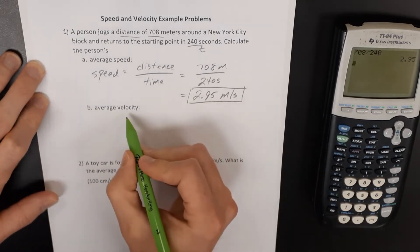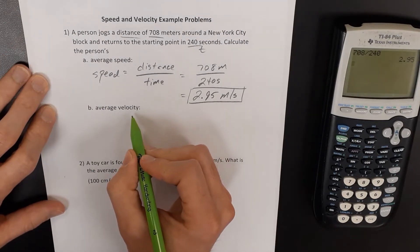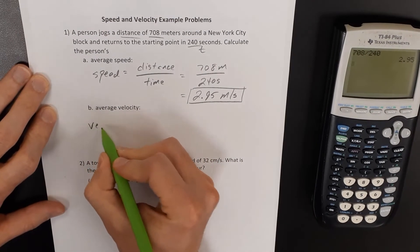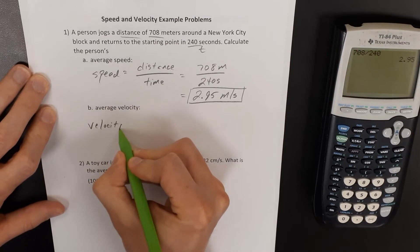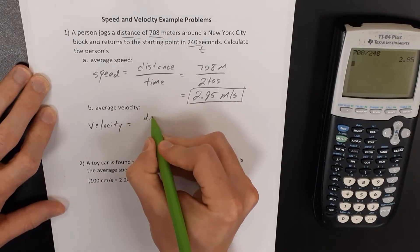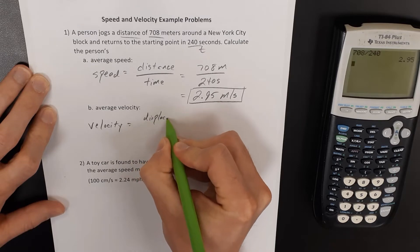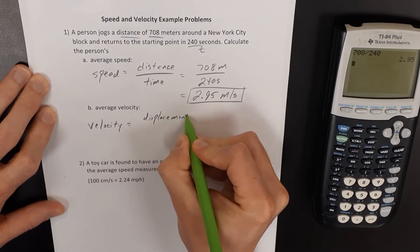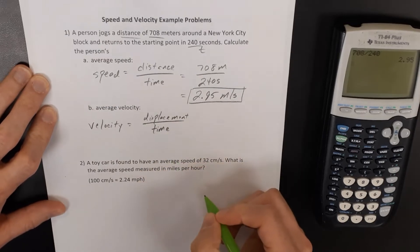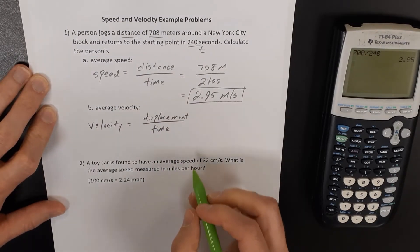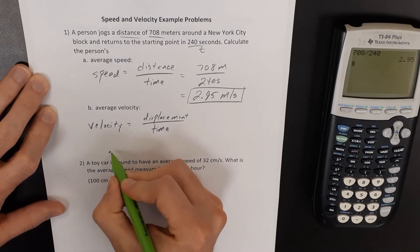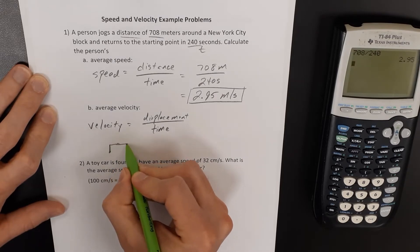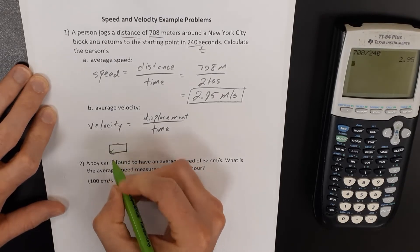All right, now if you're calculating the average velocity, that's a little bit different. Velocity is an object's displacement divided by time. Displacement means if you measure from your starting position to your ending position. Well here it says this person is going around a block, a rectangular block.